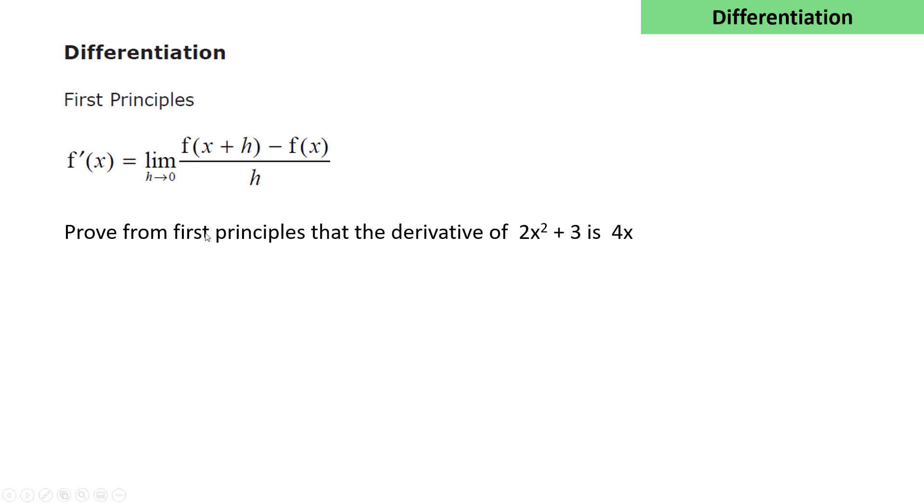Prove from first principles that the derivative of 2x² + 3 is 4x. So here we're going to set f(x) = 2x² + 3. We can then write that f'(x), the derivative of f(x), is the limit as h tends to 0.